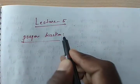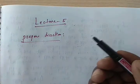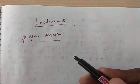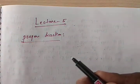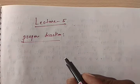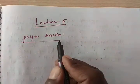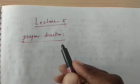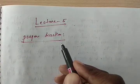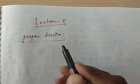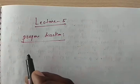A proper fraction means the numerator degree is less than the denominator degree. That type of fraction is a proper fraction. In the proper fraction, we can divide into 4 or more types. Let us see Type 1.